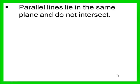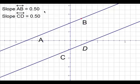Remember our definition of parallel lines are lines that lie in the same plane and do not intersect. Using our definition of parallel lines, two lines in the same plane that do not intersect, it appears that line AB and line CD are parallel, because they do not appear to intersect.